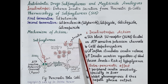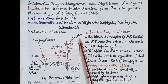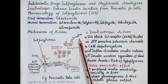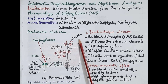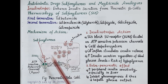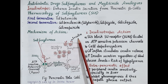Increased secretion of insulin improves transport of glucose from the blood into the body cells. This reduces levels of glucose in the blood and controls type 2 diabetes mellitus. This is how sulfonylureas stimulate pancreatic beta cells and enhance the secretion of insulin.